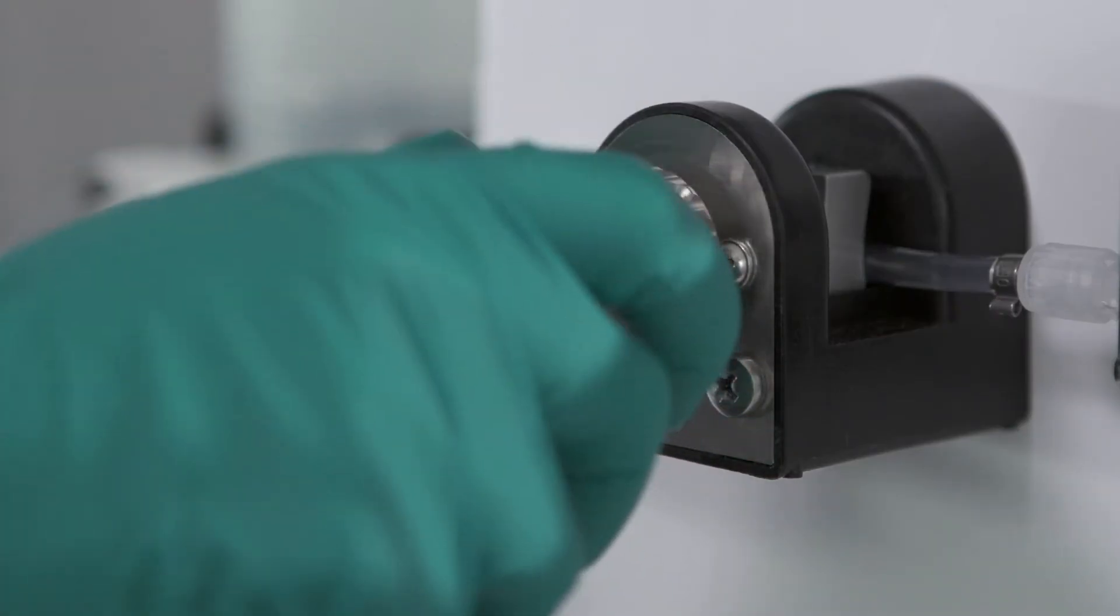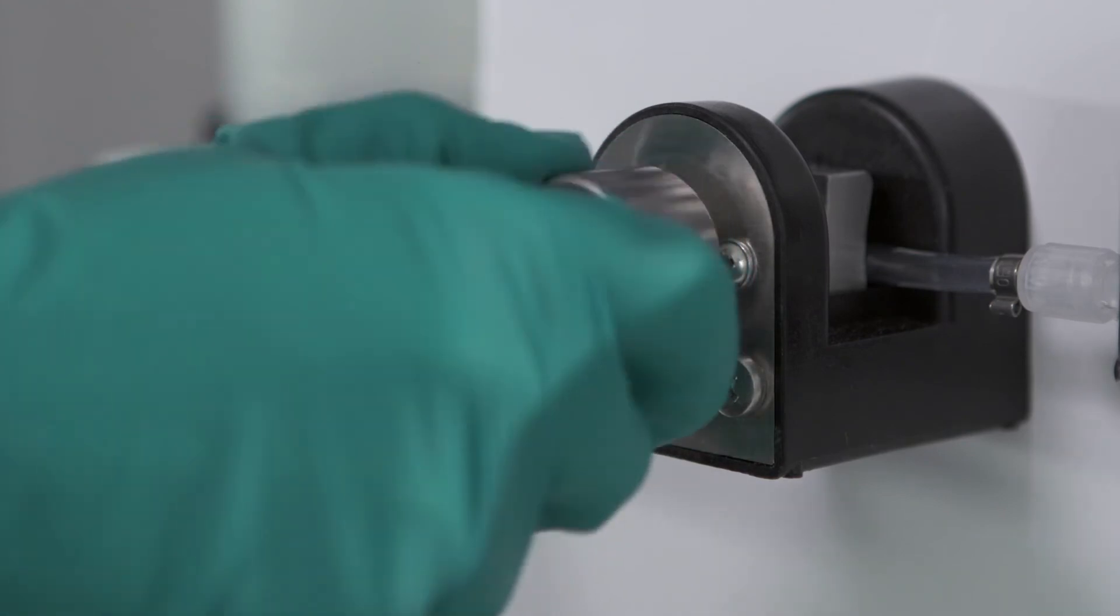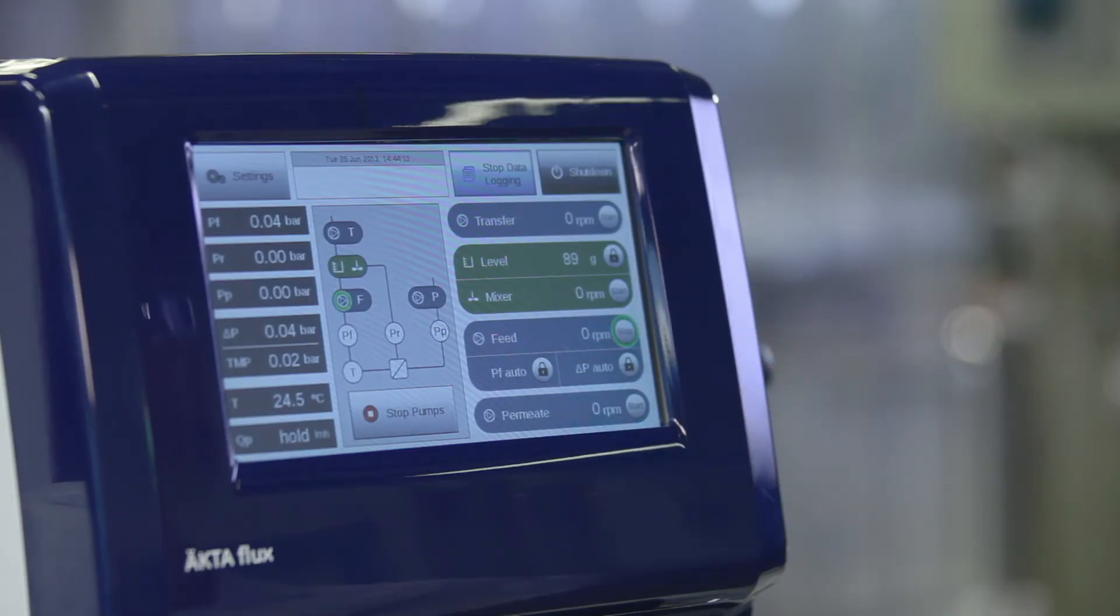For diafiltration, close the permeate valve. Start feed pump from the touch screen. Set delta P to desired pressure.